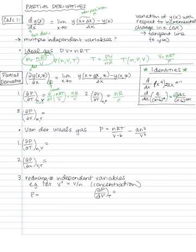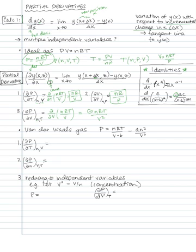Similarly, if I want to differentiate the volume — writing V equals nRT over P — with respect to temperature, I get the same form but now with pressure on the bottom. To give an example of our second identity, I'll differentiate pressure with respect to volume, holding the other independent variables constant. Taking the partial derivative with respect to V of nRT over V, I get minus nRT over V squared.